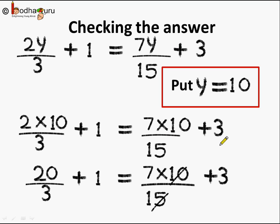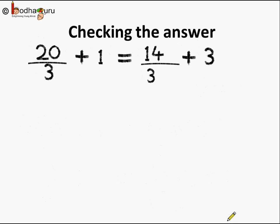So what do we get? 2 multiplied by 10 is 20 by 3 plus 1. And on the RHS we have 7 multiplied by 10 divided by 15. So denominator 15. We can reduce it. 5 2s are 10. 5 3s are 15. And just bring down plus 3. So this is the result. 20 by 3 plus 1 is equal to 14 by 3 plus 3.